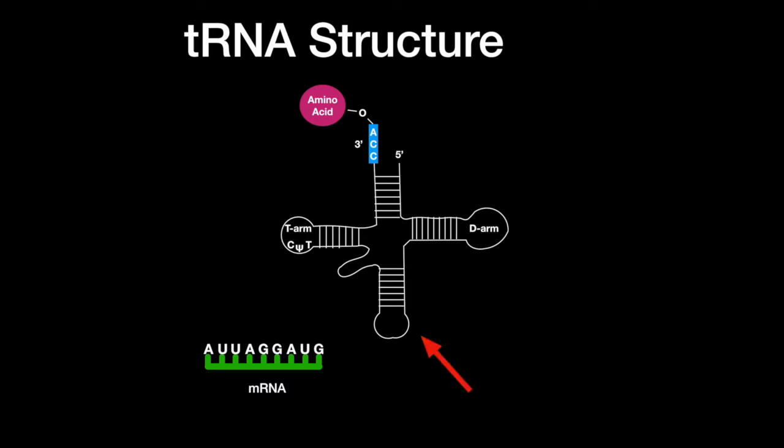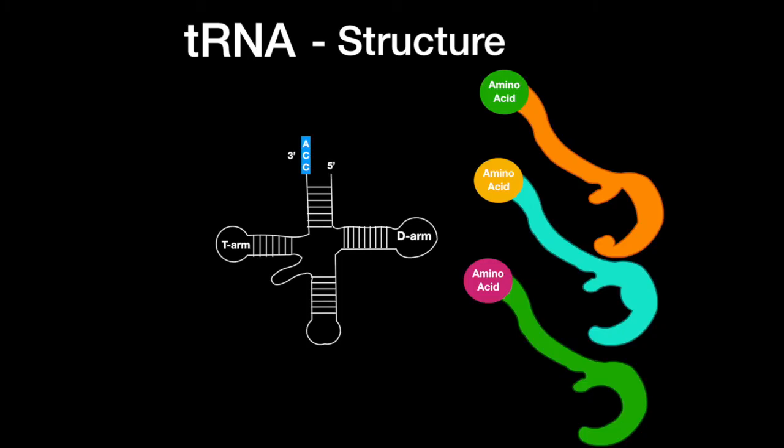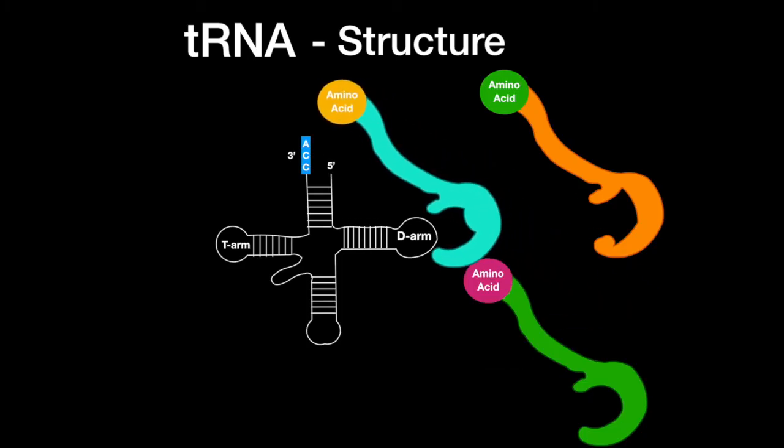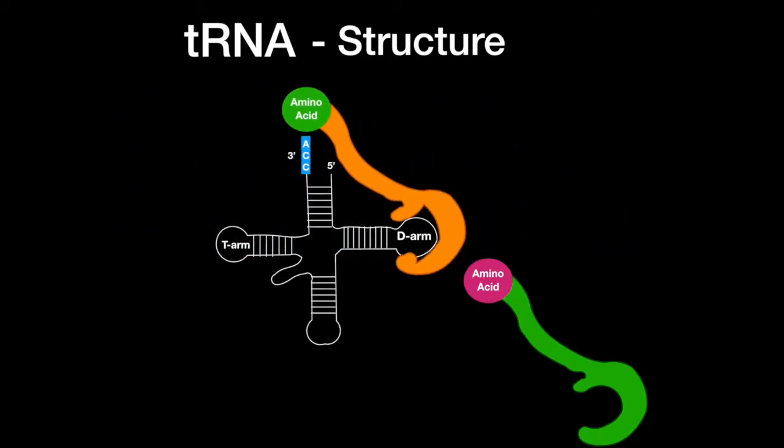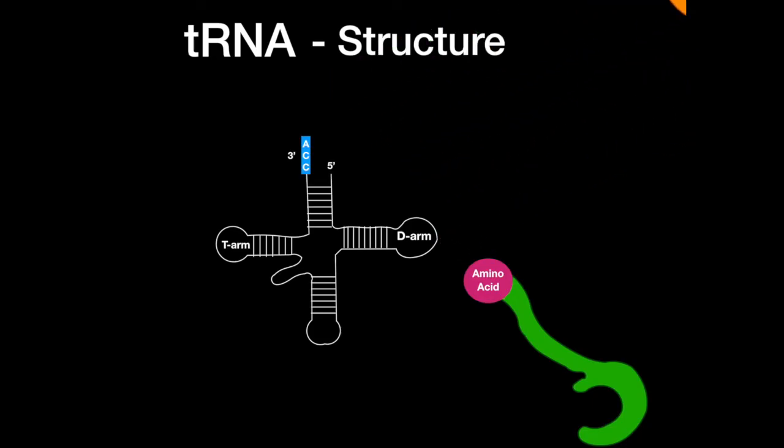Opposite of the CCA end is the anticodon. This is the region on the tRNA that recognizes the mRNA sequence in translation. Each tRNA requires a unique enzyme to attach to the tRNA. Aminoacyl tRNA synthetase will inspect closely and thoroughly to make sure the proper amino acid is linked to the proper tRNA.